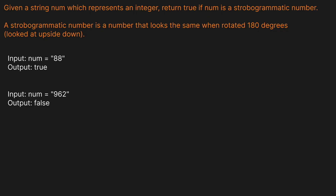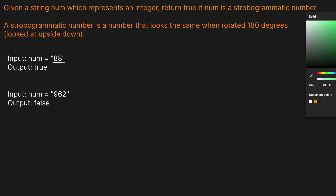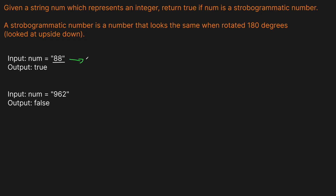Given a string num which represents an integer, return true if the number is a strobogrammatic number. A strobogrammatic number is a number that looks the same when rotated 180 degrees — looked at upside down. For example, 88: if you flip it, it's still 88. With 96, it becomes 69 and looks the same when you rotate it.